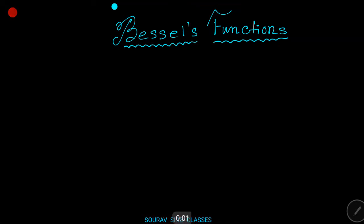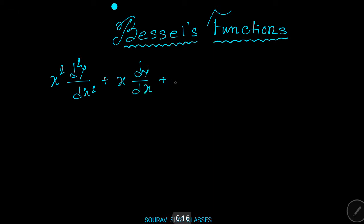Hello students, welcome to Sorofsky Classes. Today's topic is Bessel's function. The differential equation x² (d²y/dx²) + x (dy/dx) + (x² − n²)y = 0 is called the Bessel differential equation.